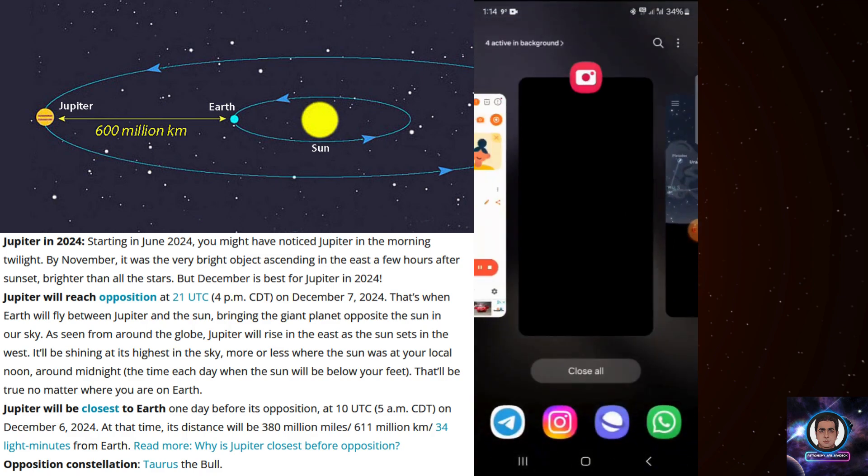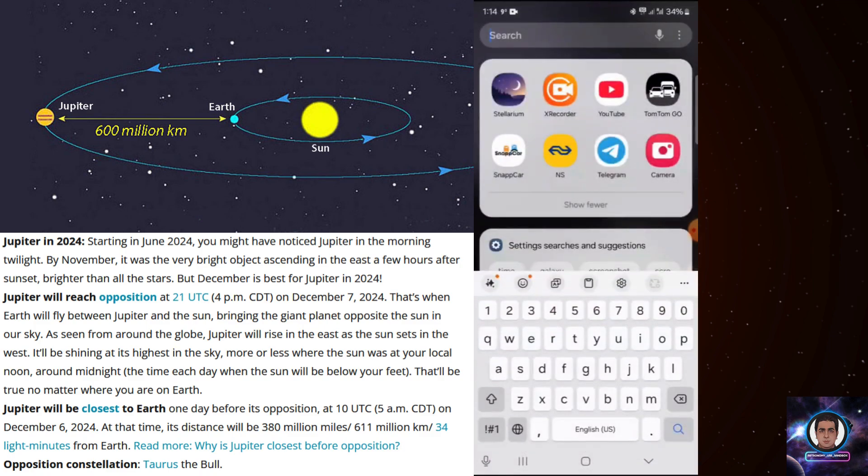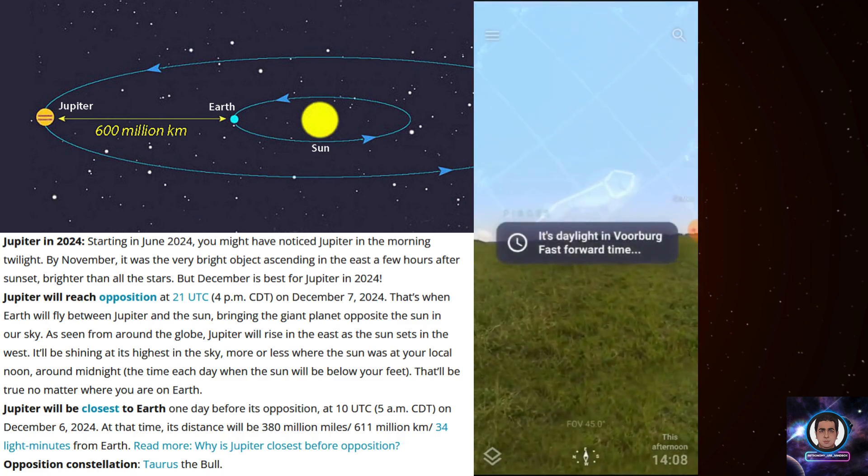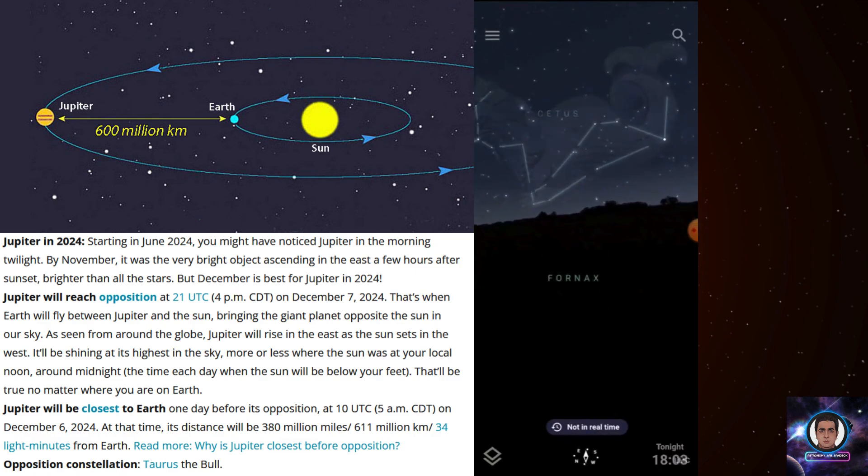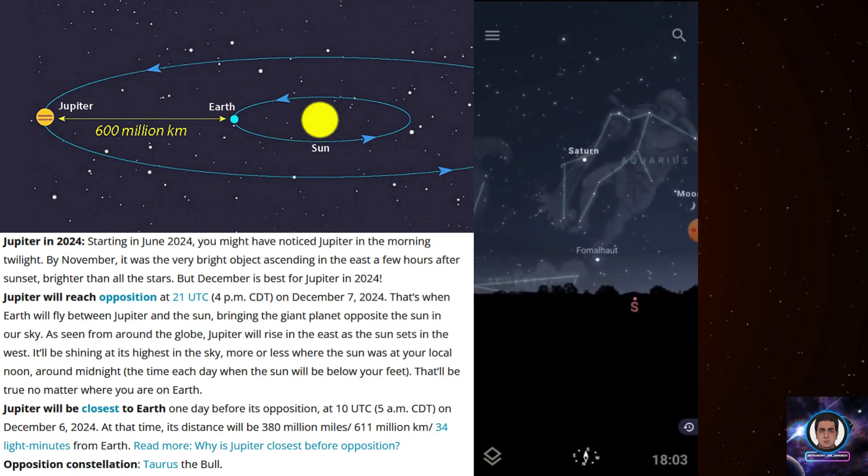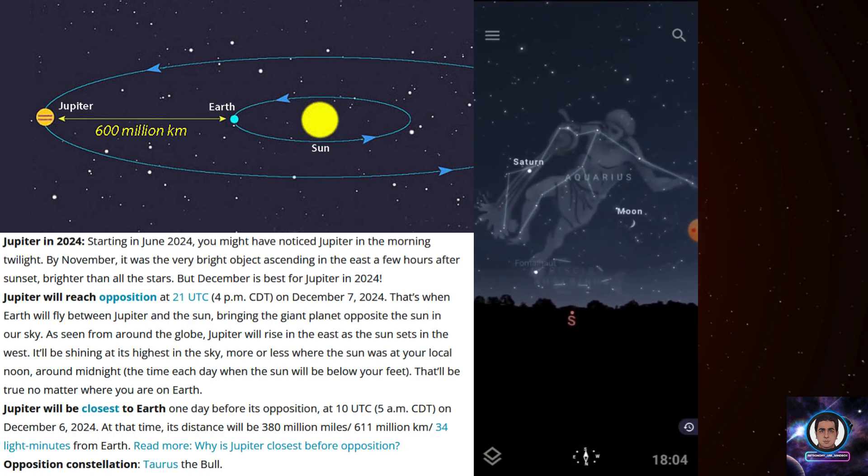With this software, I just opened the Stellarium software. I want to show you from the first—this is the symbol of the software. If you want to search it, Stellarium. I just opened it. It has a free version and the premium version. I have actually a premium version but you can also work with the free version.